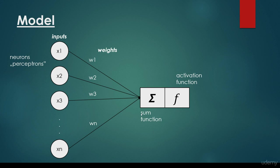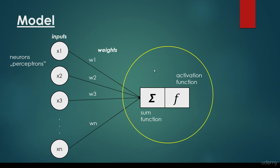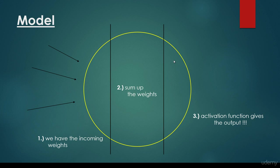Basically, the sum function and activation function together make up a neuron or perceptron. As we have seen for the biological nervous system, these neurons are connected. We have some input neurons connecting to another neuron, and more than one neuron can be connected to a given neuron. For a given neuron — shown within the yellow circle — we have the incoming edge weights, we sum them up, and then the activation function gives the output: whether that given neuron has fired or not.